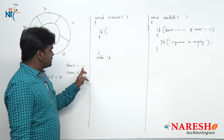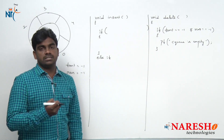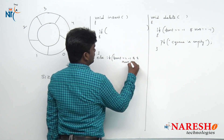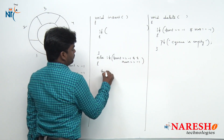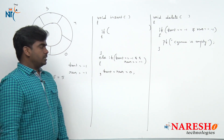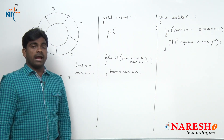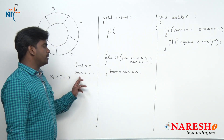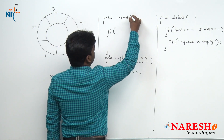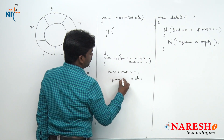If front equals minus 1 and rear equals minus 1, that means the queue is empty, so we are inserting the first element. Then front equals rear equals 0. We assign front and rear to 0, and we can insert elements with the help of rear only. That element will be stored into cqueue[rear].